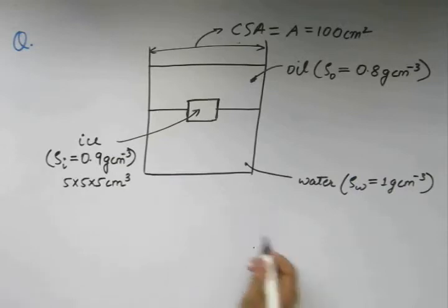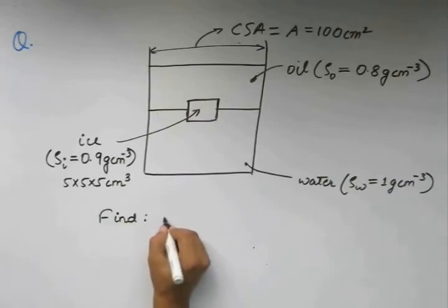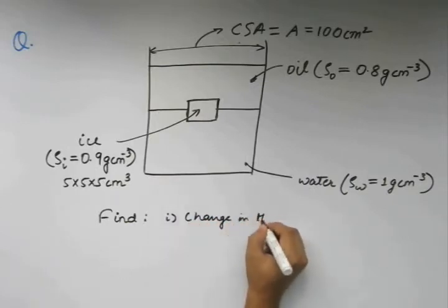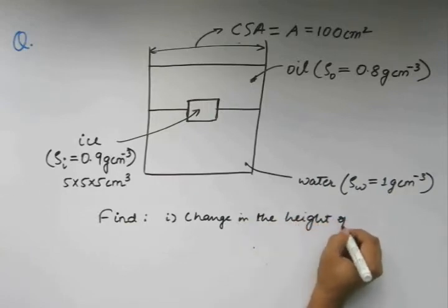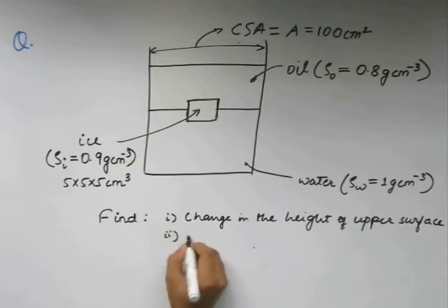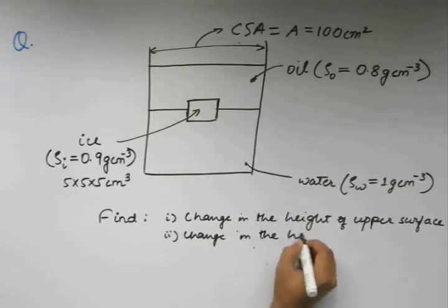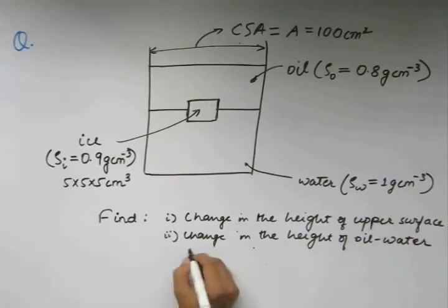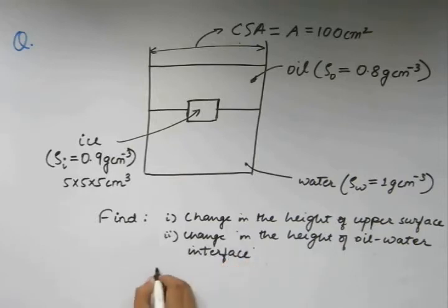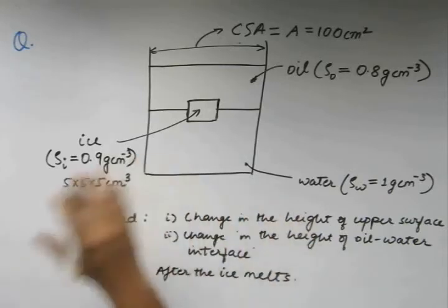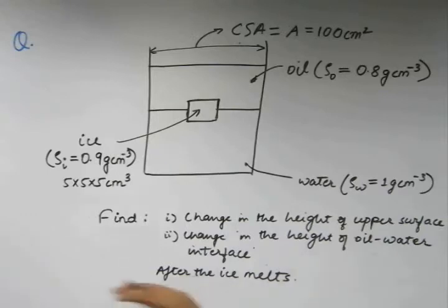What we are supposed to find are change in the height of upper surface and change in the height of the oil water interface. So this is our problem. Let us go about it systematically.